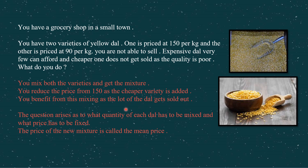Now the problem arises: what quantity of expensive dal will be mixed and what quantity of cheaper dal will be mixed? This we have to find out by the process of allegation. The second question is what price has to be fixed for the new mixture — the price of the new mixture is called the mean price.